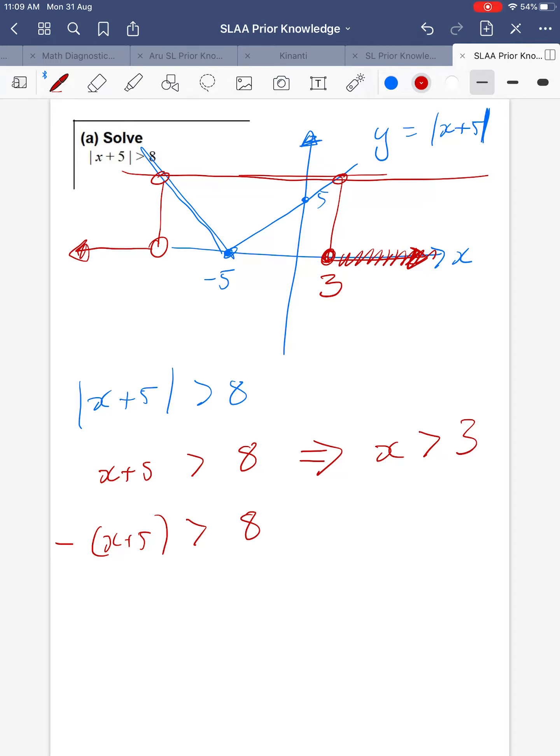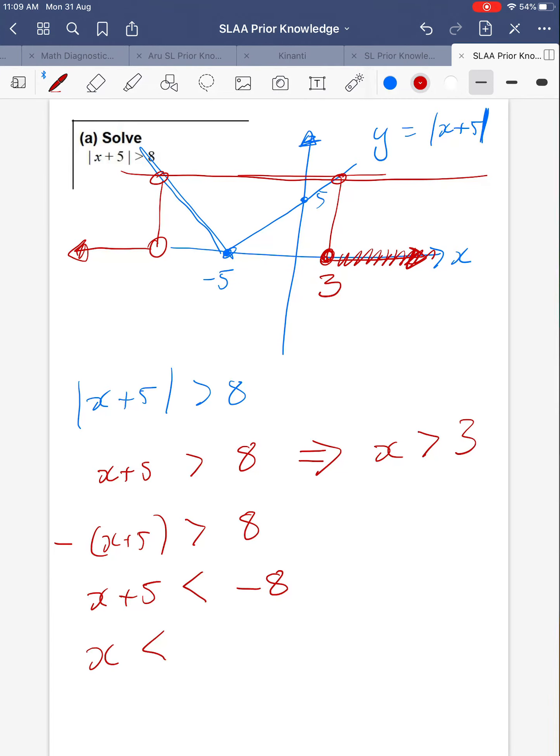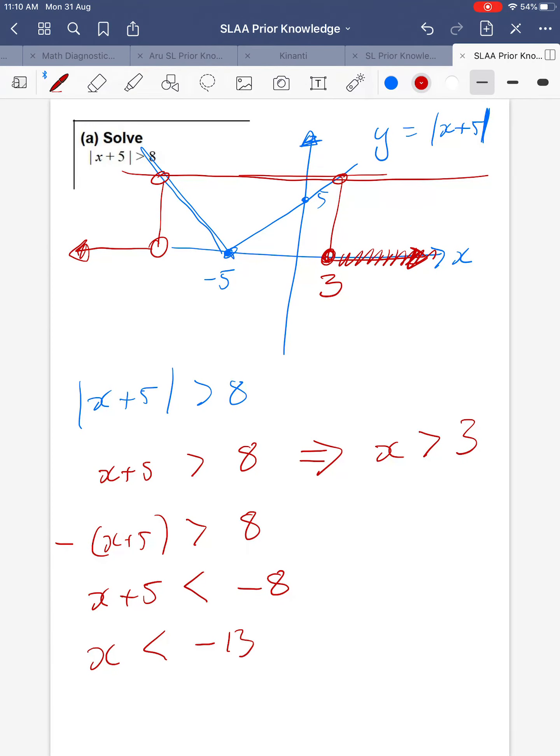And on this side, times both sides by negative 1, x plus 5 and negative 8 here, but the times by negative 1 switches the sign round. And then if we subtract 5, x is less than negative 13.